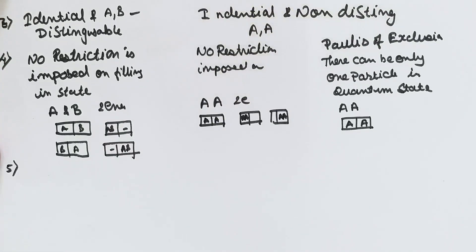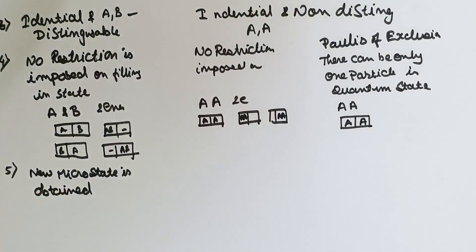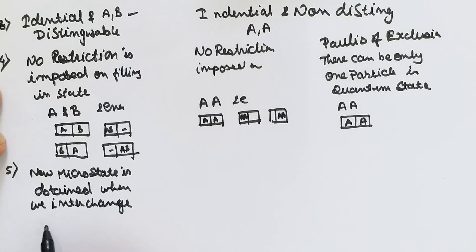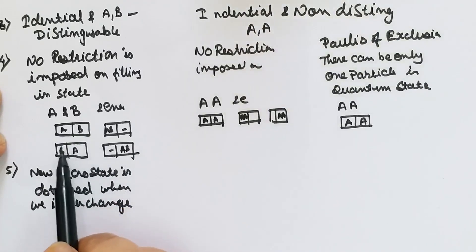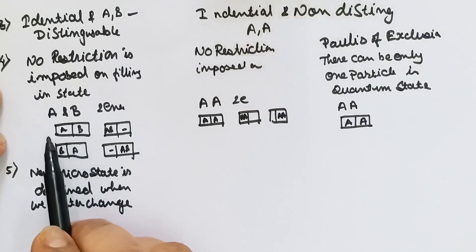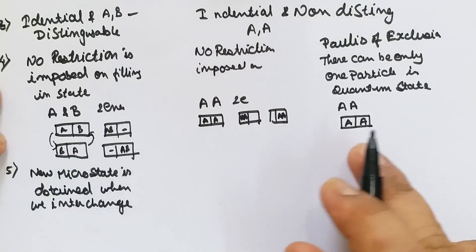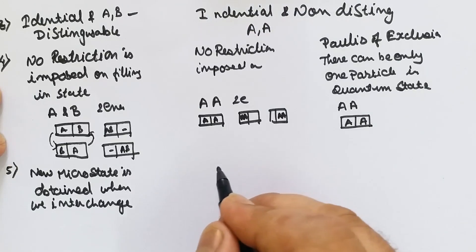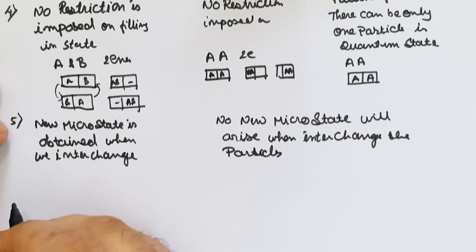A related point: when we exchange particles in Maxwell-Boltzmann statistics, a new microstate is obtained — for example, AB becomes BA, giving a new microstate. In Bose-Einstein and Fermi-Dirac statistics, since the particles are identical and non-distinguishable, no new microstate arises when particles are interchanged.